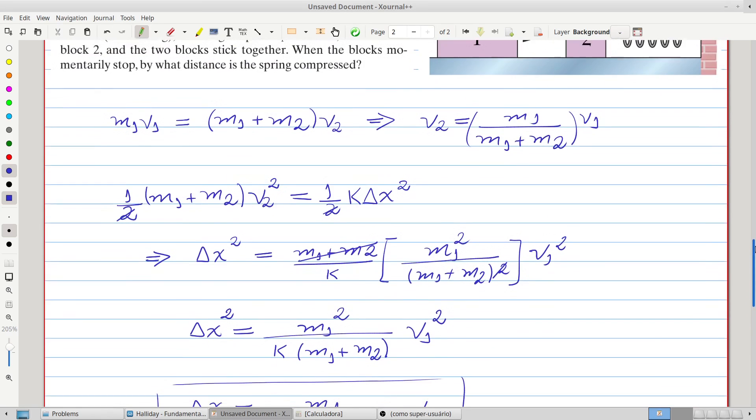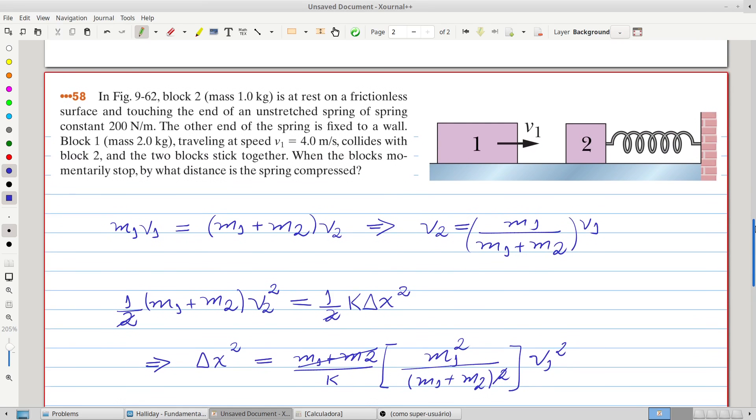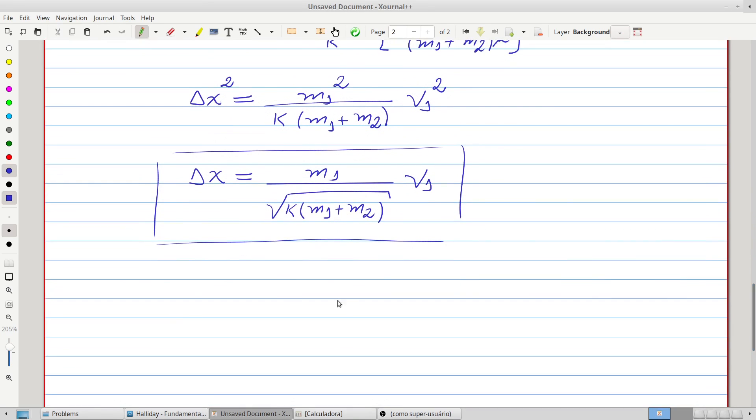Now, let's use our numerical values, block two has mass one, block one has mass two, so you have two, divided by,